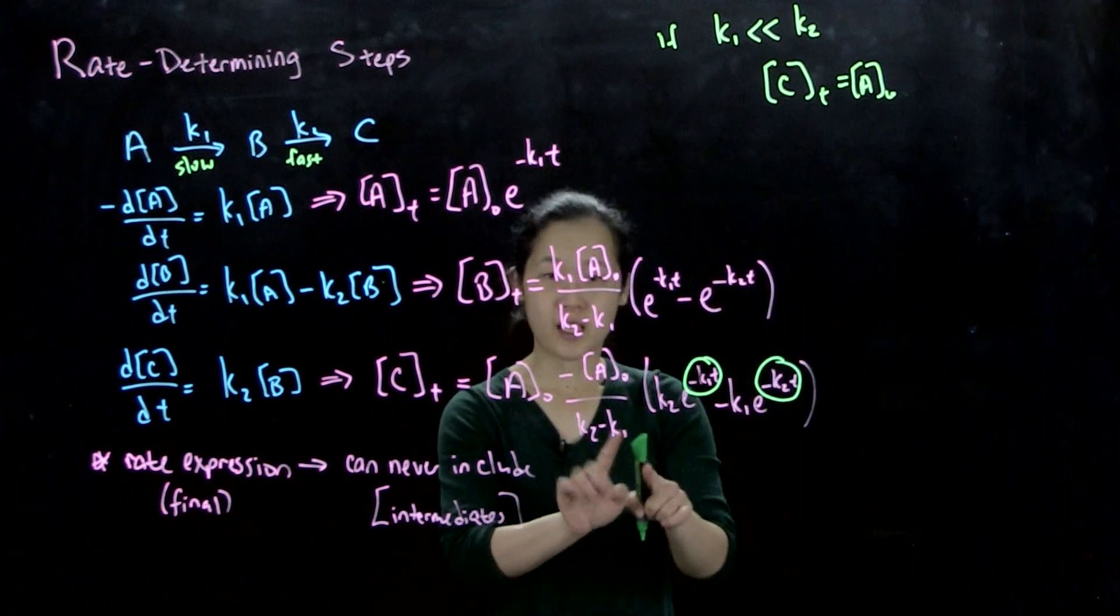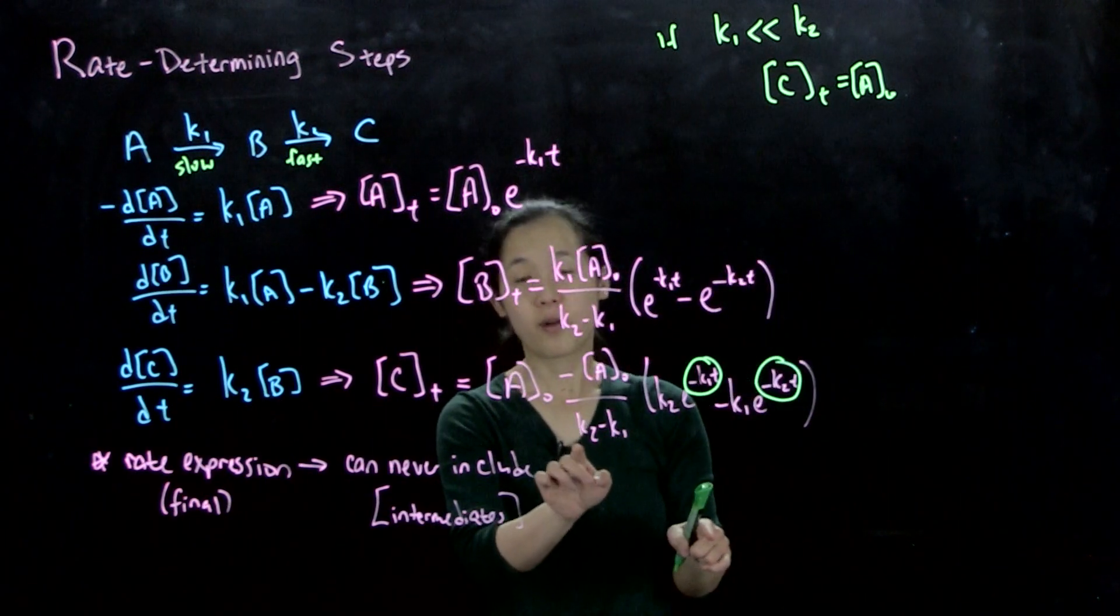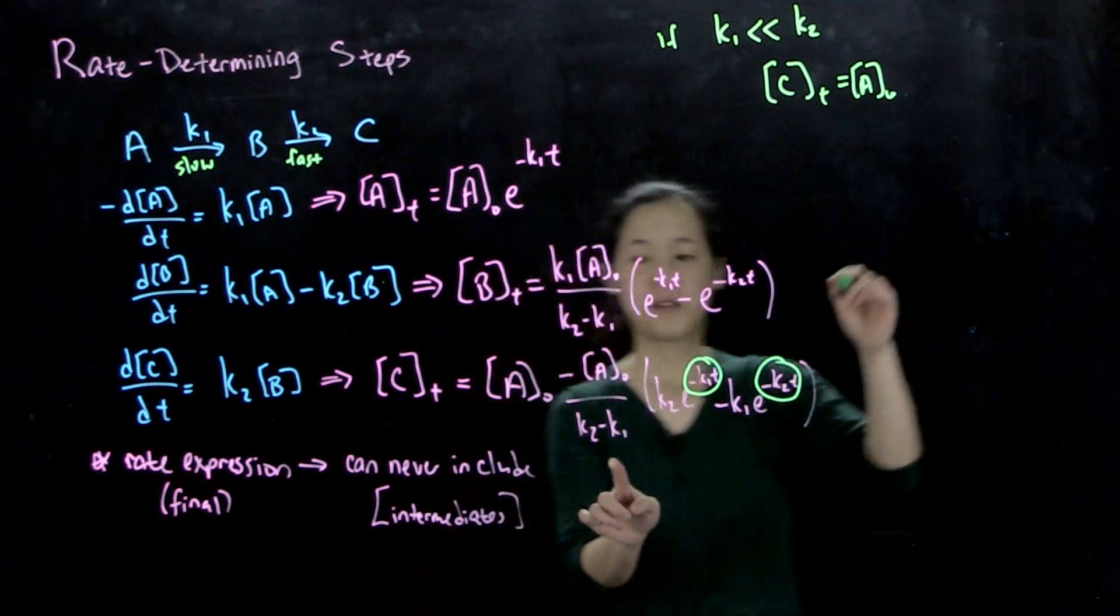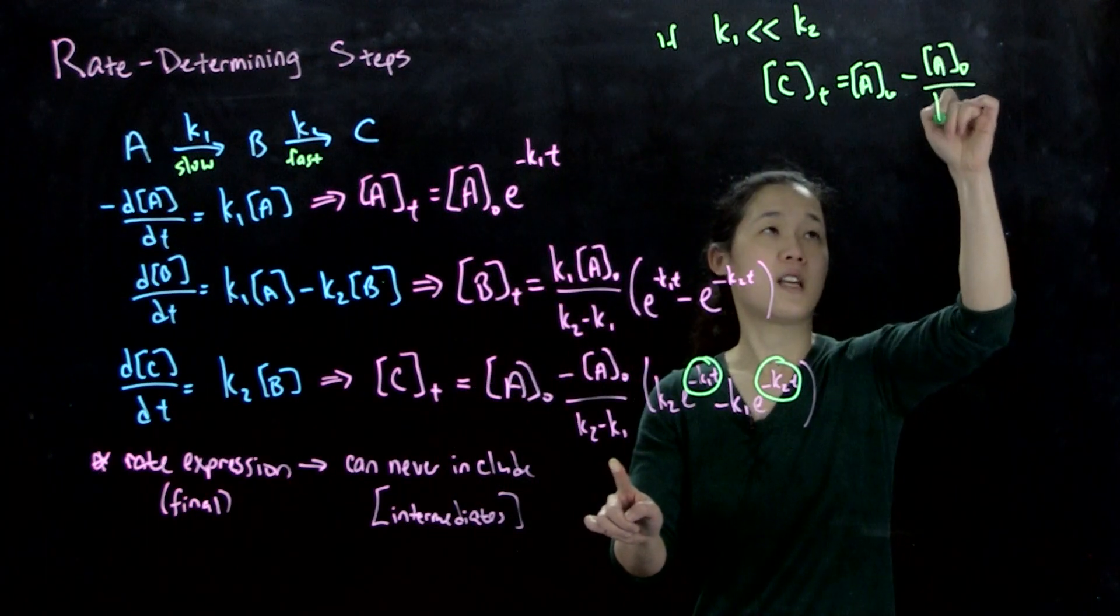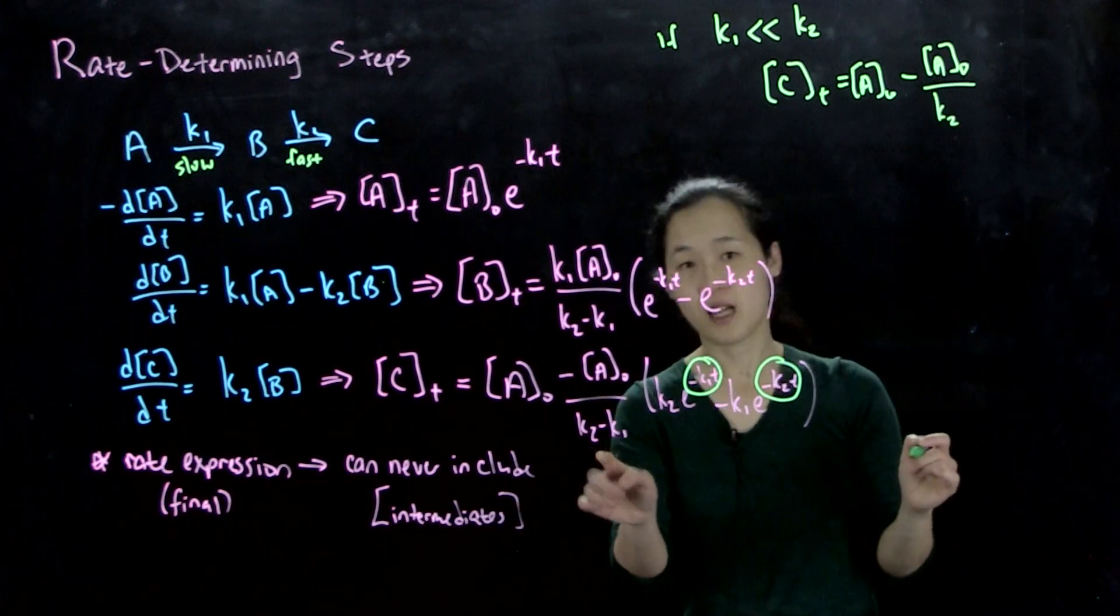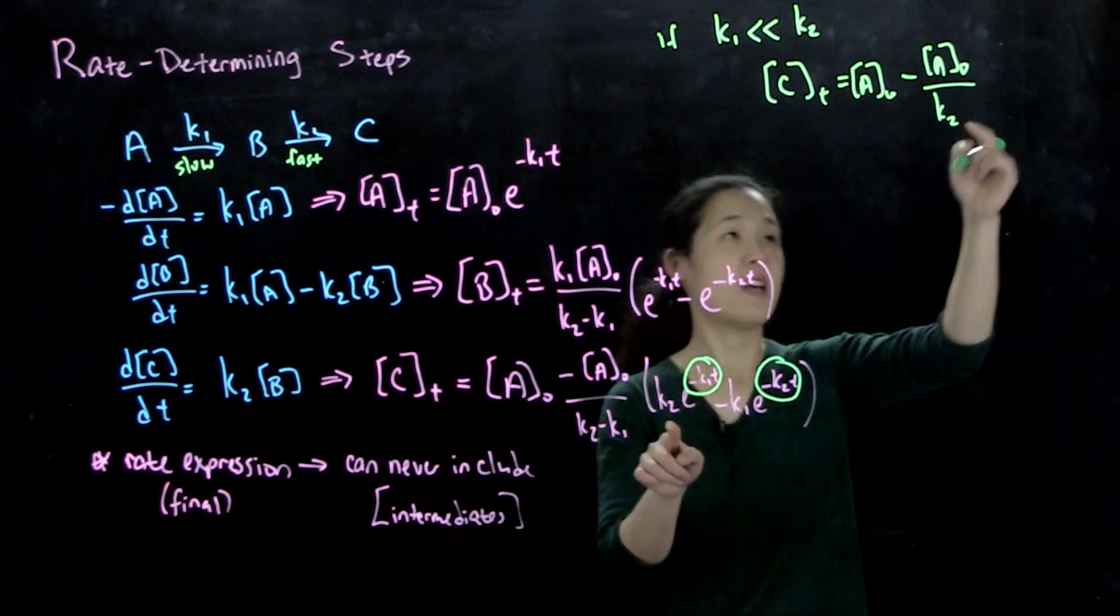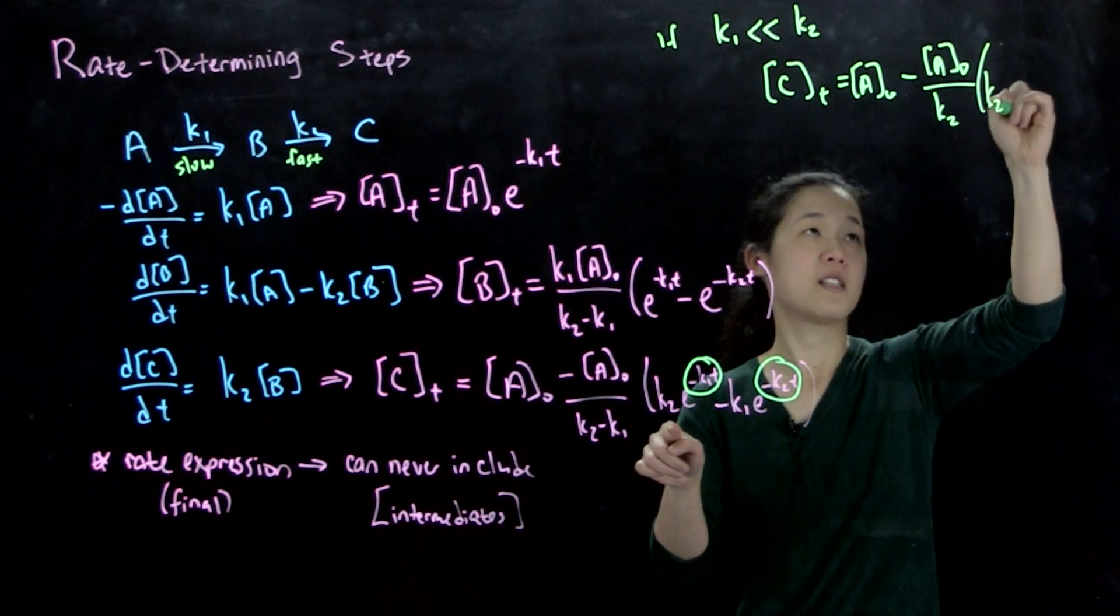And then if k2 is much, much bigger than k1, so this difference will be approximately k2. So this will be minus A0 over k2. So this is k2 is much greater than k1. And then we'll multiply this by that same expression, k2.